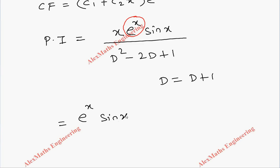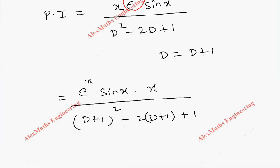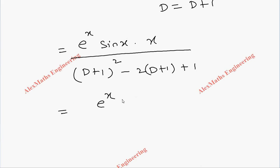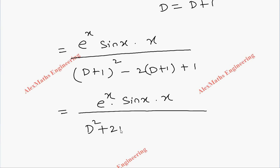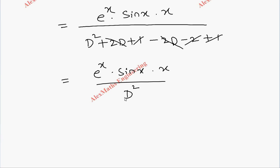We expand the denominator: (D+1)² - 2(D+1) + 1 = D² + 2D + 1 - 2D - 2 + 1. The +2D and -2D cancel, and the constants 1 - 2 + 1 = 0, so we are left with e^x · sin(x) · x divided by D².